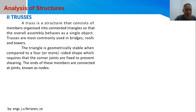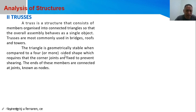This time we have trusses. A truss is a structure that consists of members organized into connected triangles so that the overall assembly behaves as a single object. Trusses are most commonly used in bridges, roofing structures, and towers. The triangle is geometrically stable when compared to a four or more sided shape, which requires that the corner joints are fixed to prevent shearing. The ends of these members are connected at joints, also known as nodes.